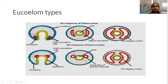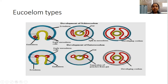In case of the enterocoelom, the coelom is formed by the evagination of the embryonic archenteron. From the embryonic archenteron, the coelomic cells develop, proliferate, and later get pinched off, developing into the coelomic cavity — these are enterocoeloms. Hemichordates, chordates, and echinoderms can be included under enterocoelom.